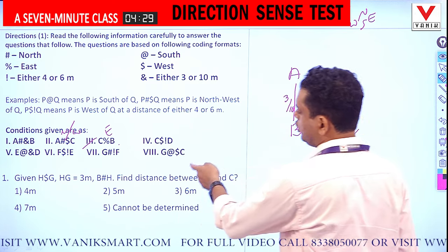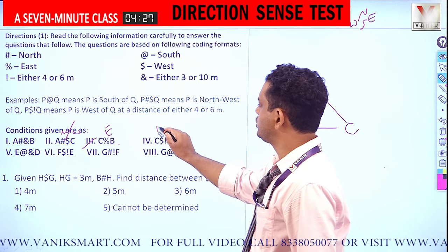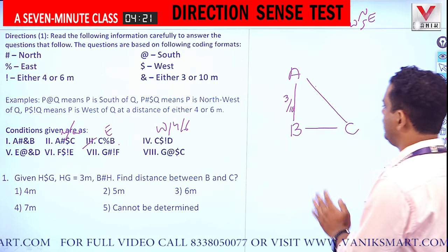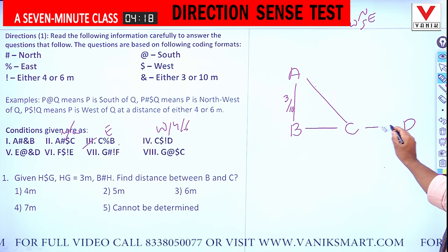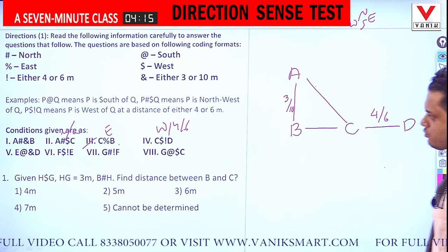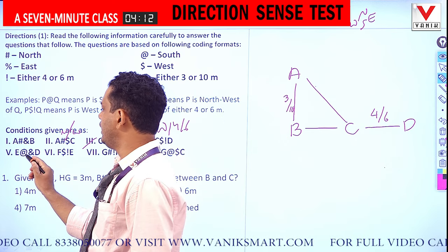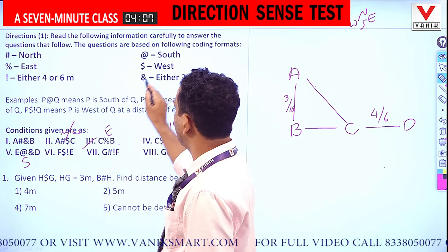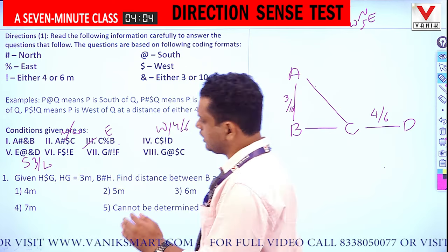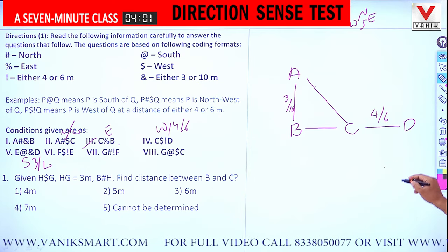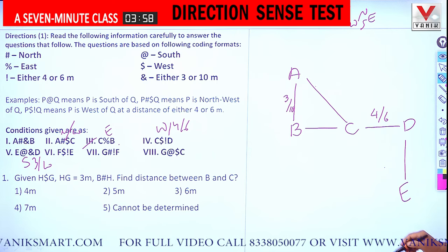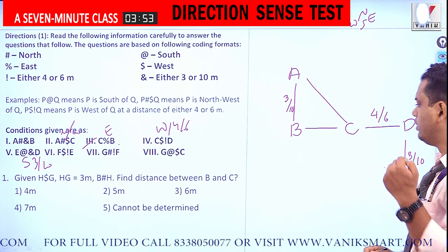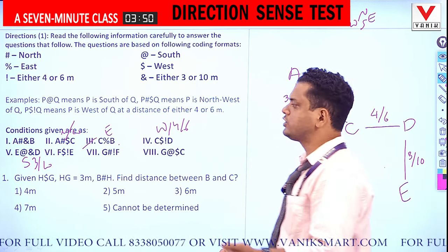Next: C $ $ D. '$' means west and '!' means 4 or 6, so C is west of D at a distance of 4 or 6. Then E @ & D: '@' means south and '&' means 3 or 10, so E is south of D at a distance of 3 or 10. I am not deciding between the values yet.